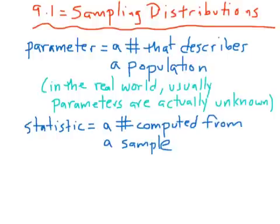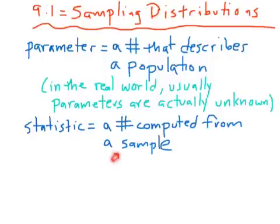I want to begin with just two definitions. The first is a parameter, and the next is a statistic. A parameter is a number that describes a population — notice there's a nice way to remember this: the P in parameter matches up with the P in population. Whereas a statistic is a number computed from a sample, so S matches up with S.